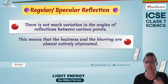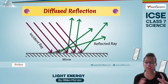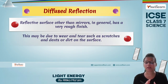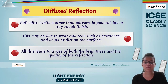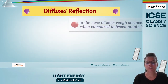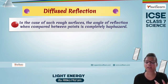Because of regular reflection, haziness or blurriness of images is eliminated and we get a crystal clear picture. In diffused reflection, the reflected rays are not placed in a particular pattern. This happens because of an irregular surface or a surface with a very rough finish. This may be due to a damaged surface, wear and tear, scratches, dents, or dirt on the surface. Diffused reflection leads to a loss of brightness and quality of reflection. With rough surfaces, the points of reflection are haphazard and we do not get a clear picture.